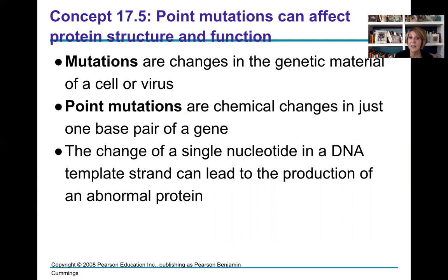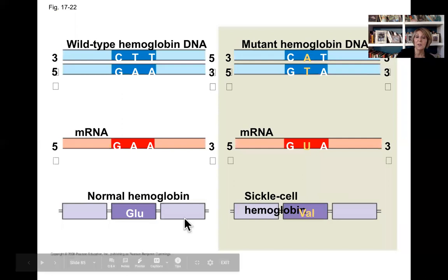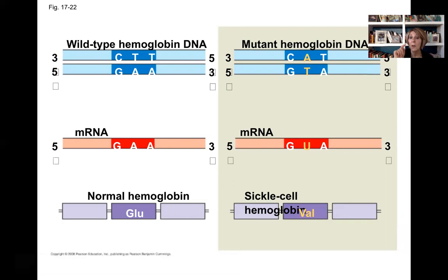Now that we know more about transcription and translation, let's revisit mutations. Point mutations are where a single nucleotide of DNA is changed. A great example is sickle cell anemia: one base difference in the DNA produces a mutated messenger RNA for sickle cell hemoglobin, resulting in one different amino acid in the sequence compared to normal hemoglobin, causing red blood cells to be malformed.